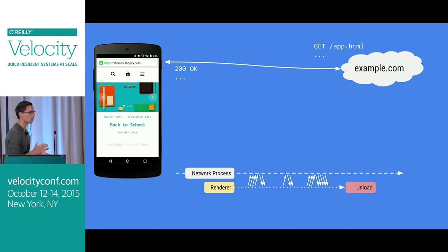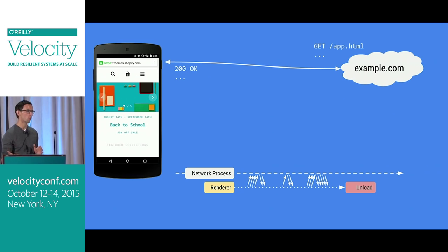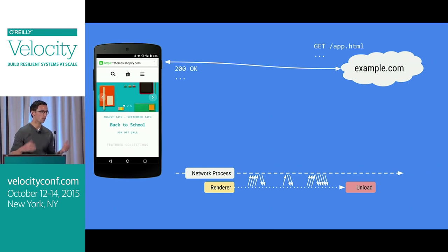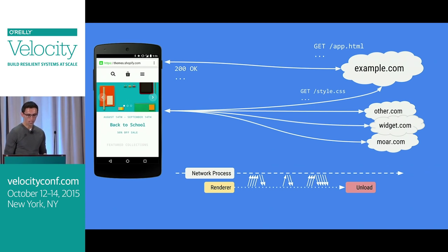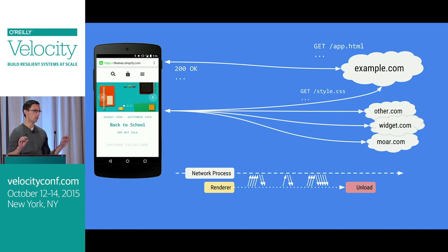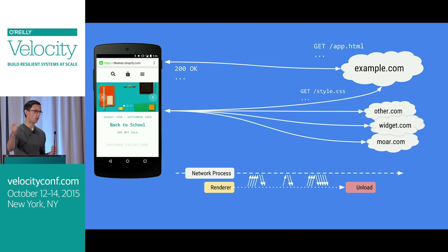Before we do that, let's talk about what we're trying to solve and what Service Worker does, because some of you have probably read about it and some may not have heard about it. The typical flow today: you have a phone, you type in the URL, we send a request to example.com and get a 200 back. The browser starts parsing the data, then starts sending out other requests for the CSS, for widgets on the page, and all the rest. At a high level, you have the renderer process at the bottom doing all the parsing, and then a network process that lives inside the browser — typically independent — that actually gets the IPC calls saying, I need to fetch this thing.